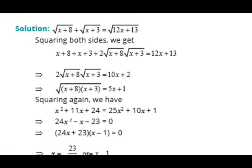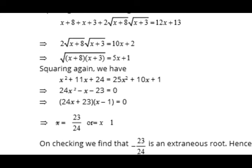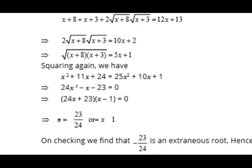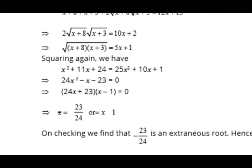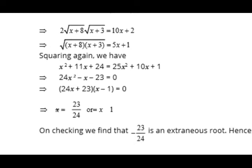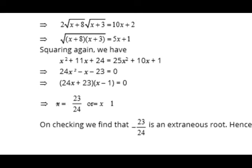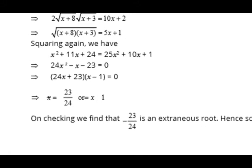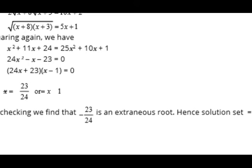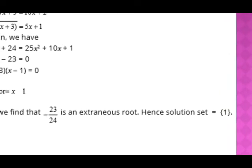After simplifying — dividing by 2 — we multiply the values under the radical sign: (x + 8)(x + 3). Squaring again, on the left-hand side we remove the radical sign, and on the right-hand side we apply (a + b)² = a² + 2ab + b². We move all values to one side and factorize. The factors are easy since 24 − 23 = 1, giving factors 23/24 and 1. On checking, 23/24 is an extraneous root, so the solution set is {1}.